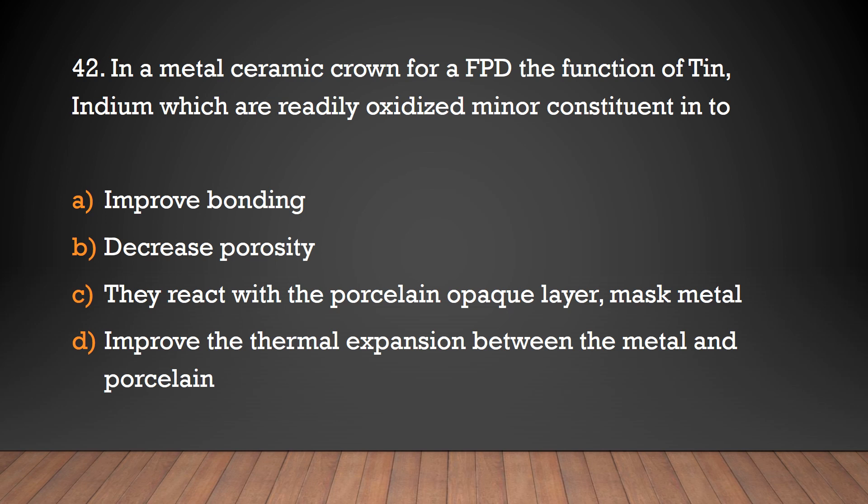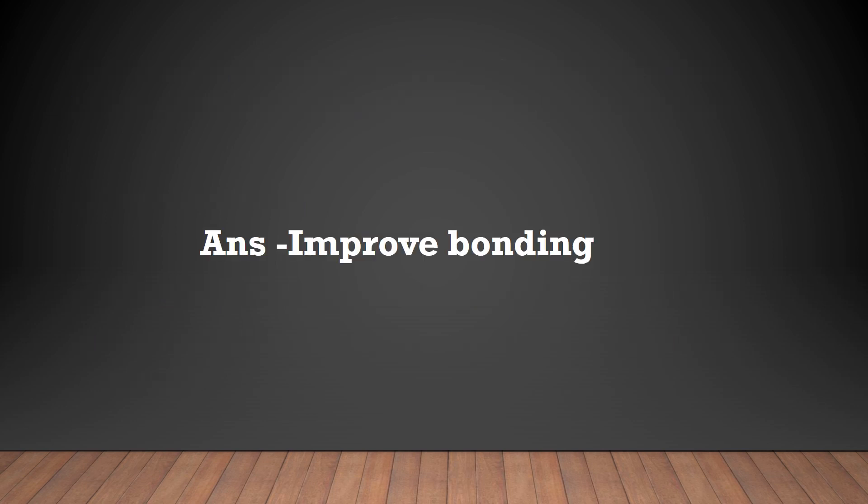In a metal-ceramic crown for an FPD, what is the function of tin and indium, which are readily oxidized minor constituents? They improve bonding, decrease porosity, react with the porcelain opaque layer, mask metal, or improve the thermal expansion between the metal and porcelain. The answer is: improve bonding.